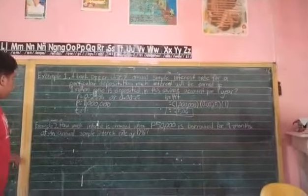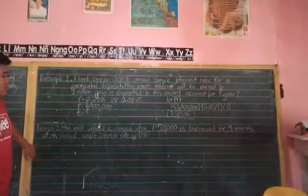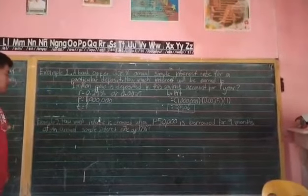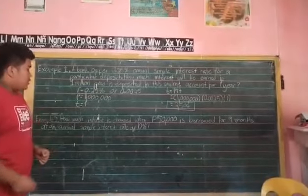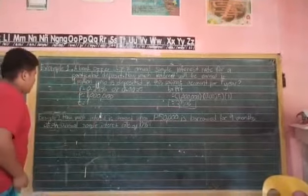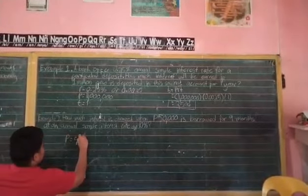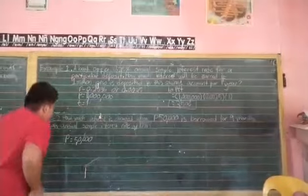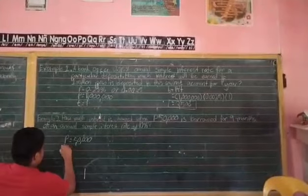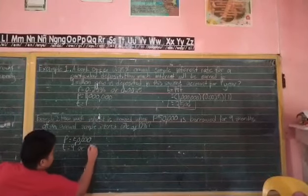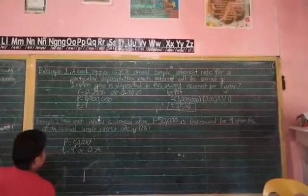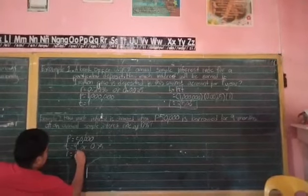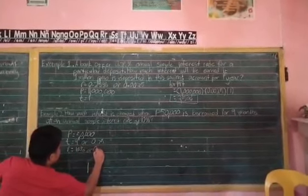Let's move to example number 2. How much interest is charged when 50,000 pesos is borrowed for 9 months at an annual simple interest rate of 10%? First, we have to identify the given. We have 50,000 which is our principal, and 9 months which is our time, or 0.75 in years. And we have 10% which is our rate, or 0.1.